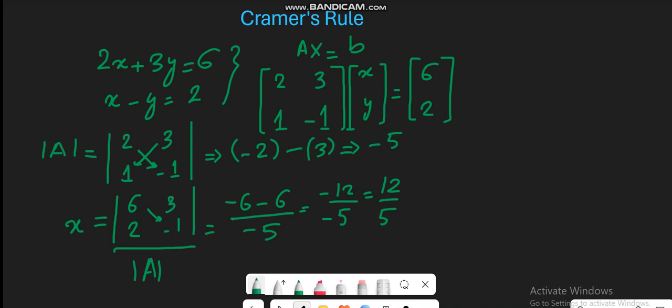Following the same steps, we can find y. So y is equal to... now x will remain as it is in the column, which is 2 and 1, and in place of y we will write the B vector, which is 6 and 2.